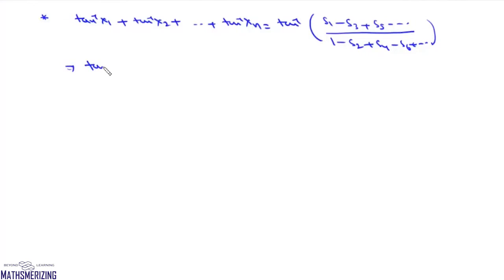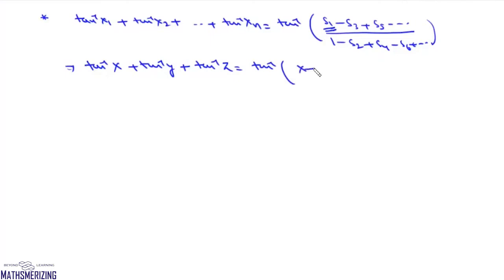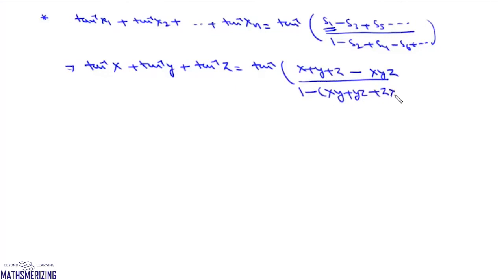From this general formula, we can write the formula for tan⁻¹(X) + tan⁻¹(Y) + tan⁻¹(Z). It will be tan⁻¹ of: S1 is the sum of all values, so X + Y + Z, minus S3 which is the product of all three, divided by 1 minus S2 where S2 is the sum of products taken two at a time, giving XY + YZ + ZX.